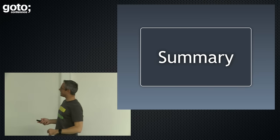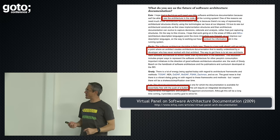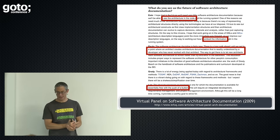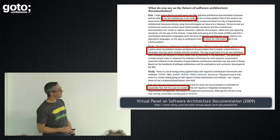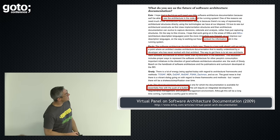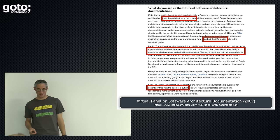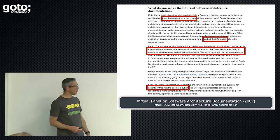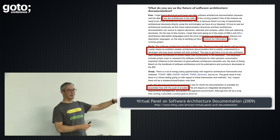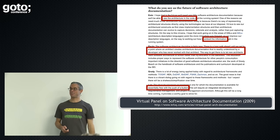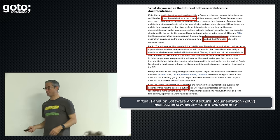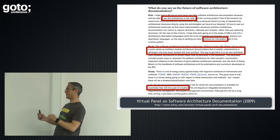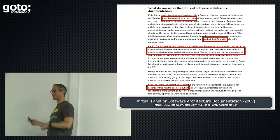In summary, there was a virtual panel about software architecture documentation from 2009 — Owen is on it, of course. It says things like: we should be able to see the architecture in the code, we should be able to embed this information in the code, we should be able to get the documentation from the click of a button. It's really about automating as much of this documentation as possible. I don't think we're there yet, but I think we can get there, and we are starting to.